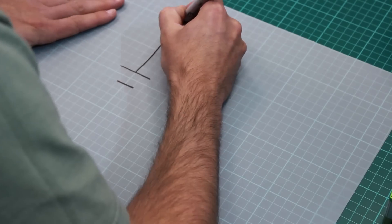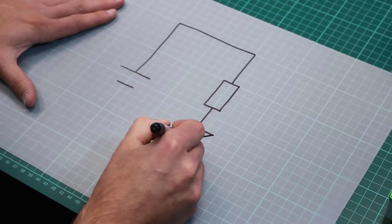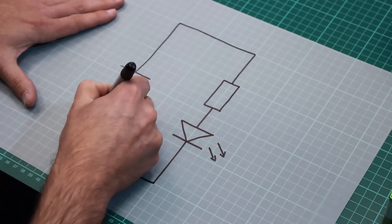So here I've drawn a very simple series circuit consisting of a battery, a resistor, and an LED.